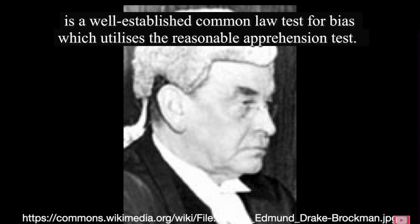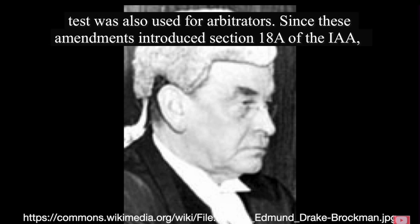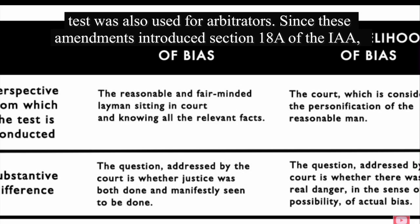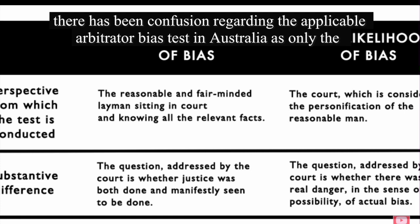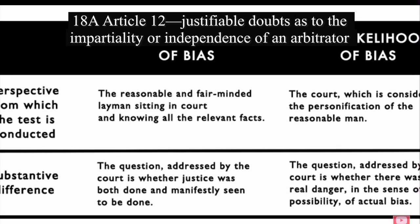In Australia, there is a well-established common law test for bias which utilizes the reasonable apprehension test. Up until the 2010 amendments to the International Arbitration Act 1974 (CTH) (IAA), this common law test was also used for arbitrators. Since these amendments introduced Section 18A of the IAA, there has been confusion regarding the applicable arbitrator bias test in Australia, as only the second limb was expressly articulated in the provision. The provision states: 18A Article 12 — justifiable doubts as to the impartiality or independence of an arbitrator.